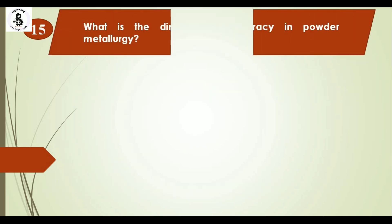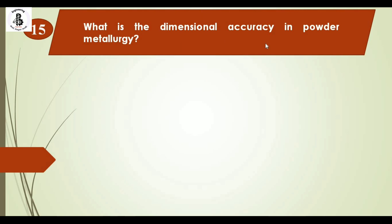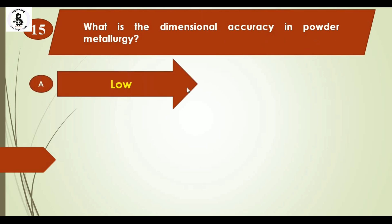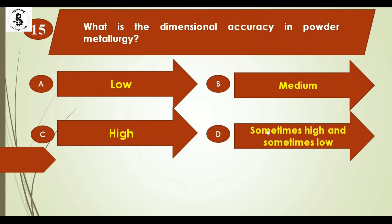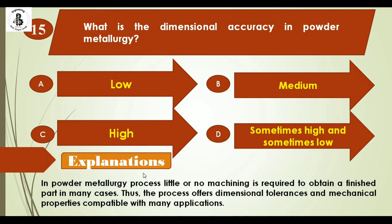Question 15: What is the dimensional accuracy in powder metallurgy? Option A: low, Option B: medium, Option C: high, Option D: sometimes high and sometimes low. In powder metallurgy, little or no machining is required to obtain a finished product. The process offers excellent dimensional tolerance and mechanical properties, resulting in high dimensional accuracy. The right answer is option C: high.